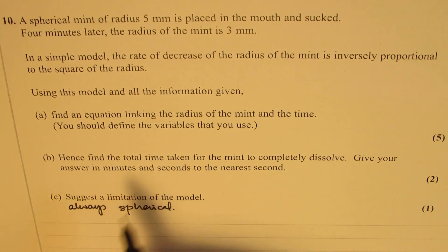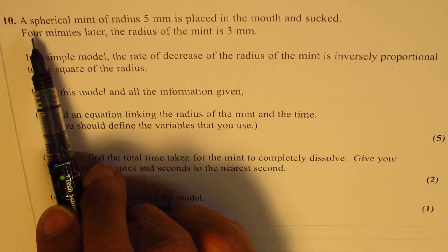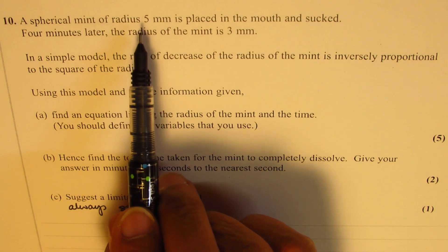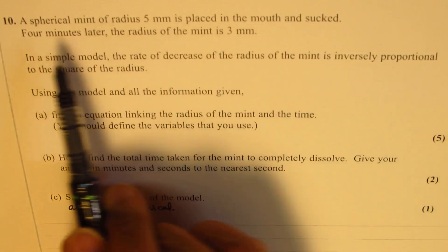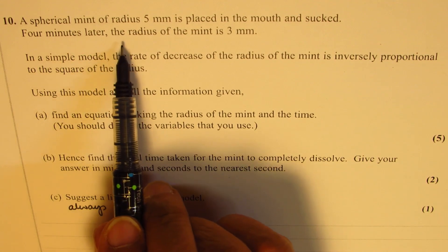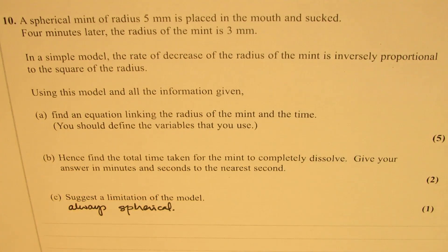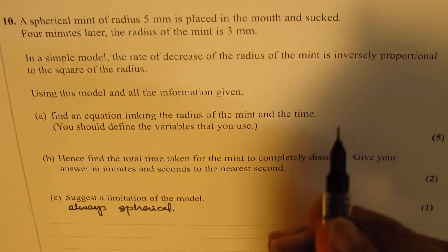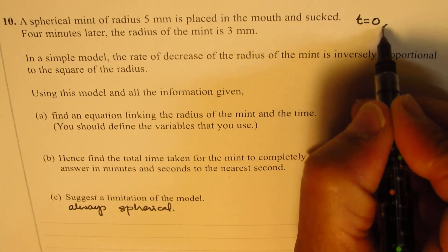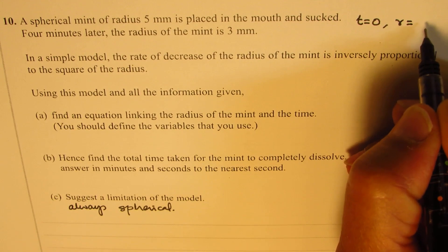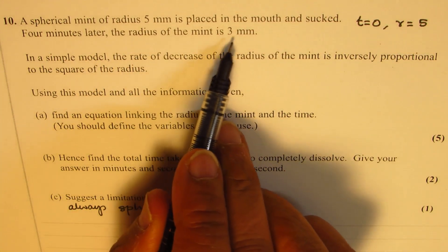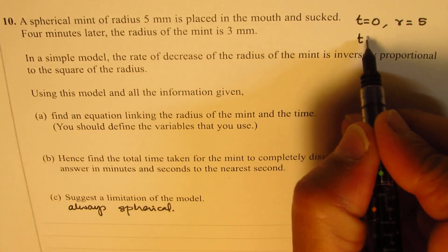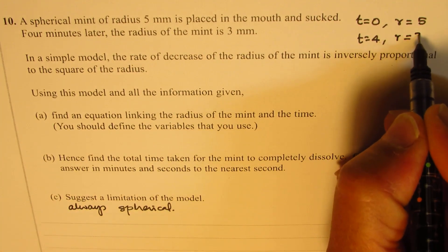Now we'll derive the formula from the given conditions. We are given that the spherical mint of radius 5 mm is placed, so initially the radius is 5 mm. Four minutes later, the radius of the mint is 3 mm. So in this case, at t equals 0, the radius of the mint is 5. And when t equals 4, the radius becomes 3 mm.